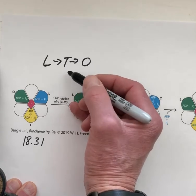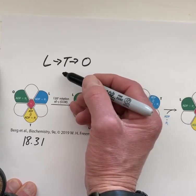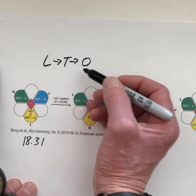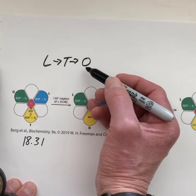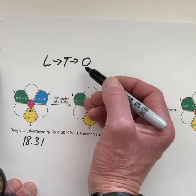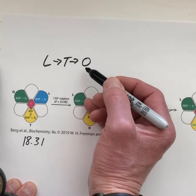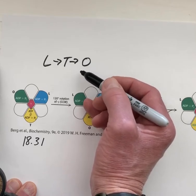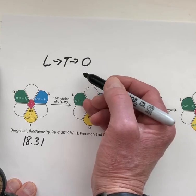The important power stroke of this whole motor is the transition from the T state to the O state. During this transition, we're able to actually pry the ATP loose from the active site of the beta subunit.